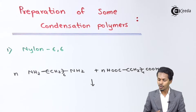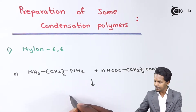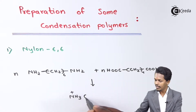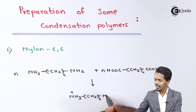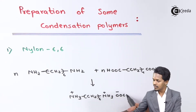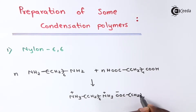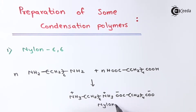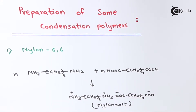This salt is known as nylon salt. Its formula is: ⁺NH3-(CH2)6-NH3⁺ paired with ⁻OOC-(CH2)4-COO⁻. The two amine groups become protonated (positive charge) and the two carboxylate groups become deprotonated (negative charge).